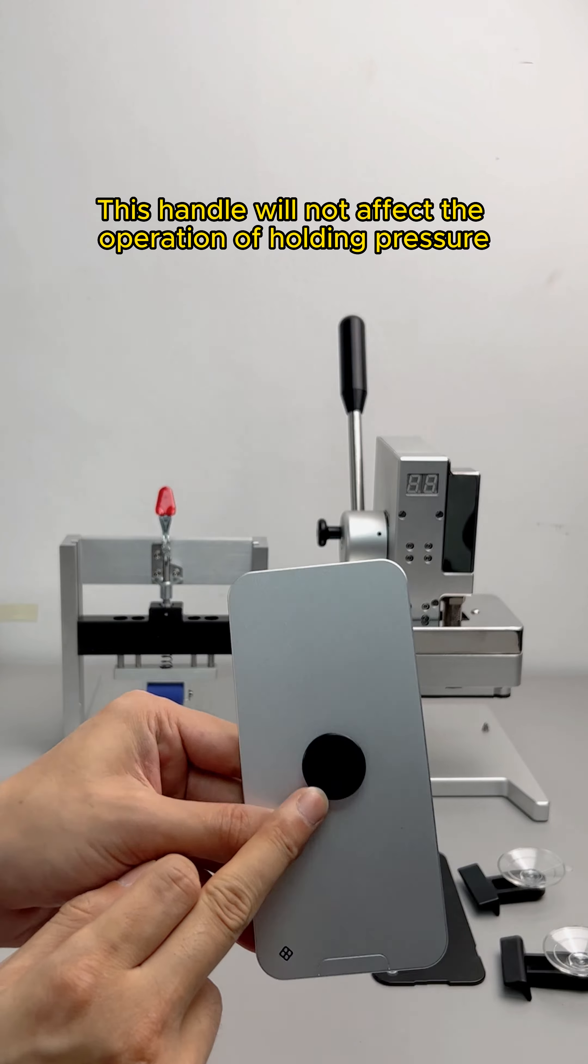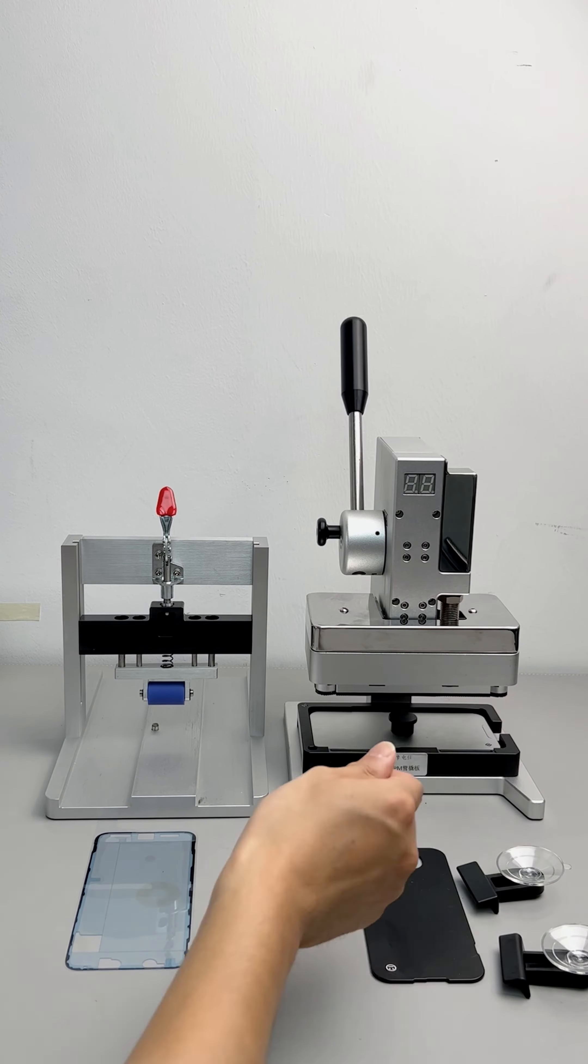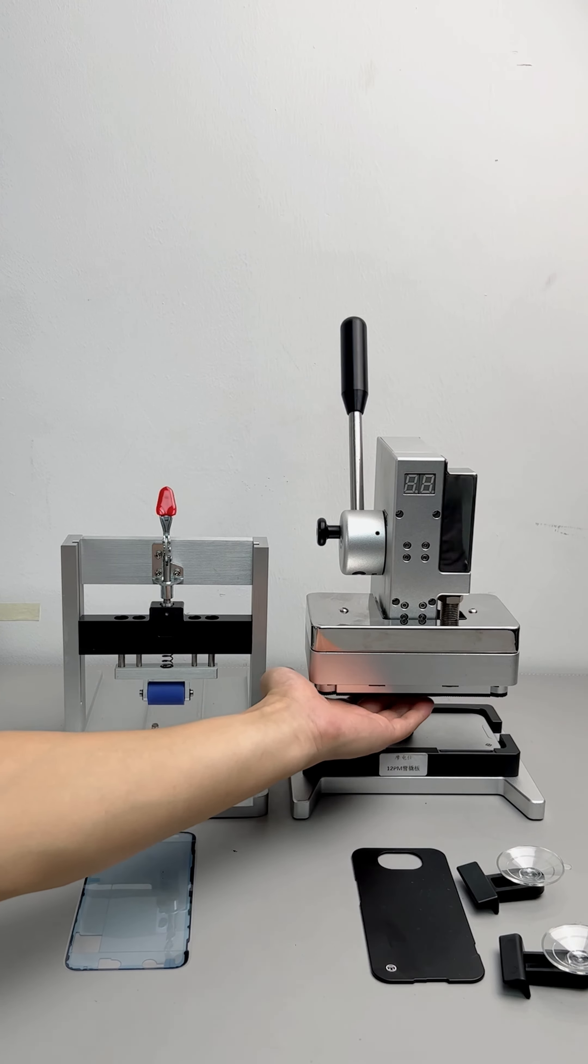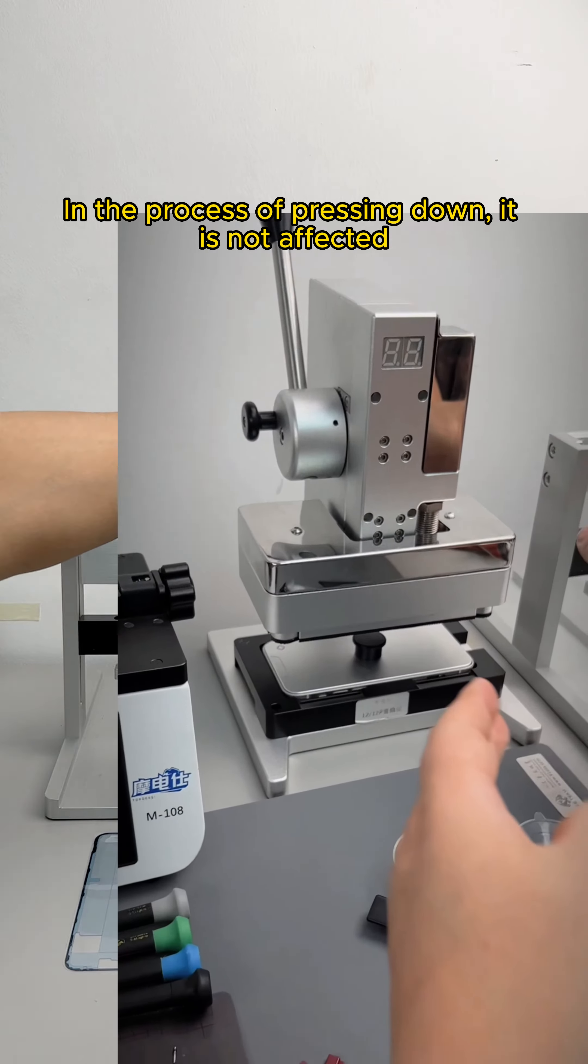This handle will not affect the operation of holding pressure. Let's take a look. The bottom of the battery press is empty, so the handle doesn't matter. In the process of pressing down, it is not affected.